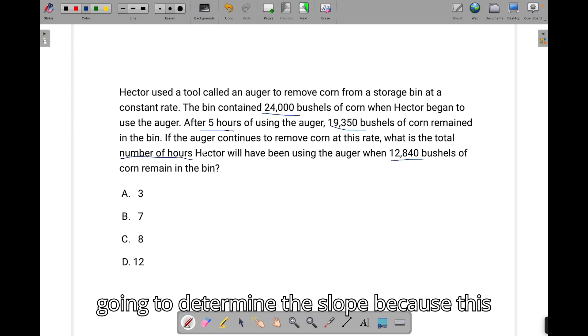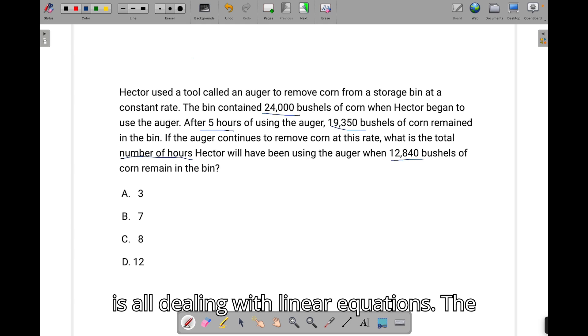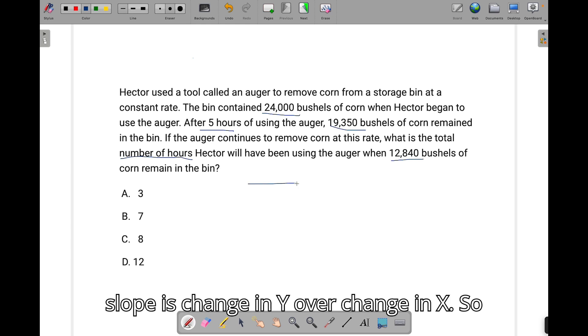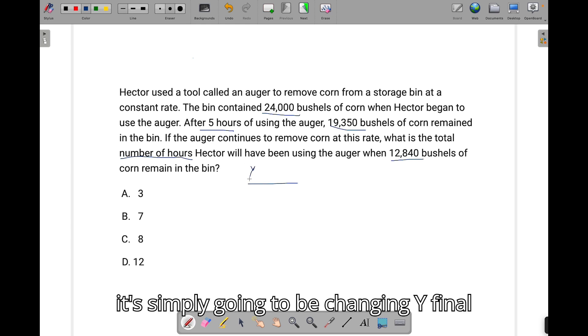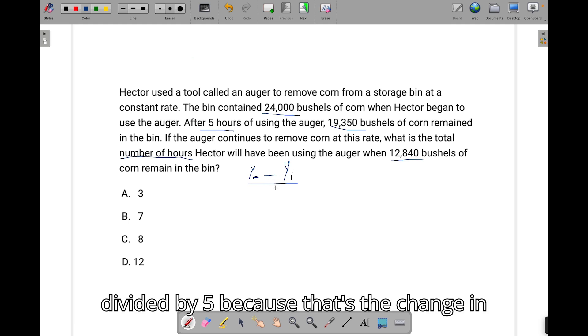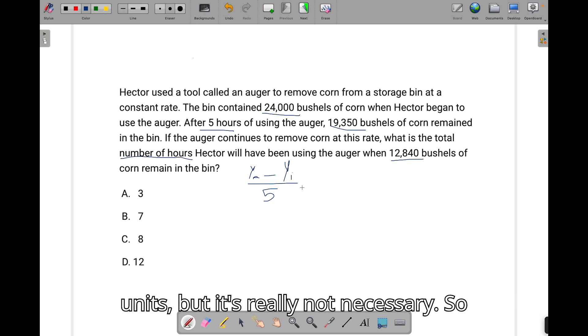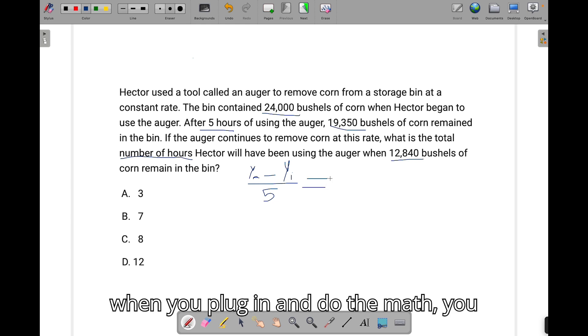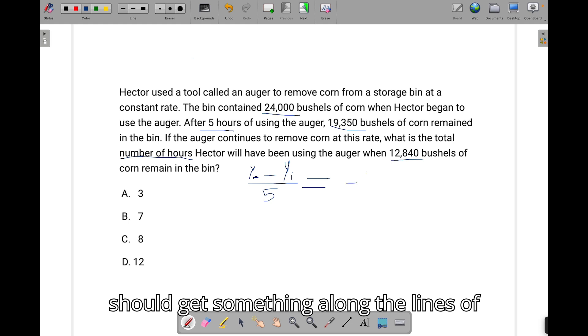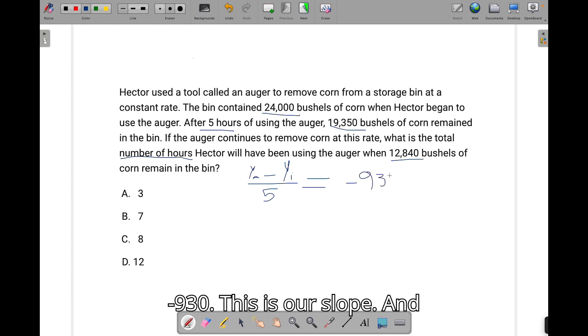So first, we're going to determine the slope, because this is all dealing with linear equations. The slope is change in y over change in x. So it's simply going to be change in y-final, that 19,000 amount, minus y-initial, divided by 5, because that's a change in x. You can plug in units, but it's really not necessary. So when you plug in and do the math, you should get something along the lines of negative 930. This is our slope.